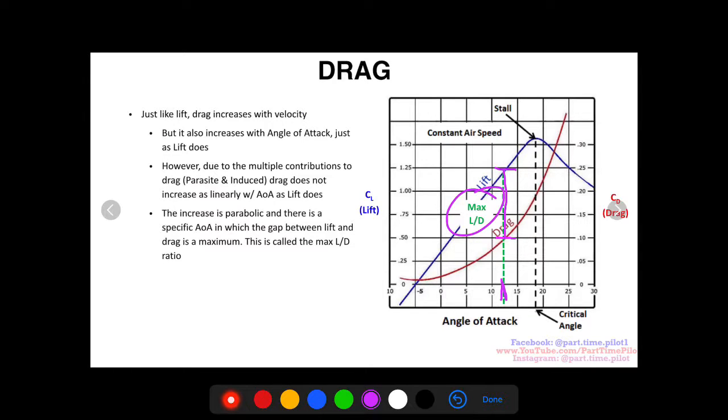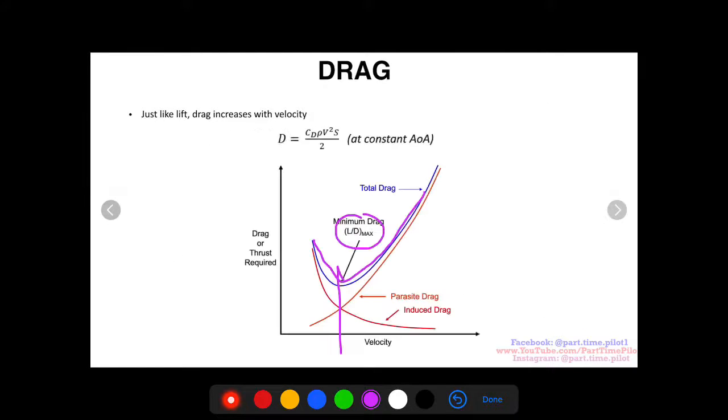And the key points of what we talked about today is the max L over D. We showed that here on the angle of attack chart, that there's a specific angle of attack that gives us a max L over D. And there's a specific velocity that gives us the max L over D.